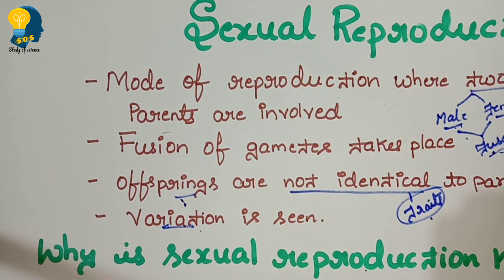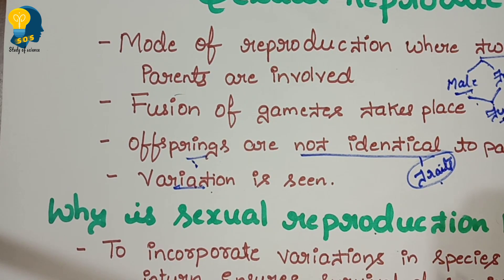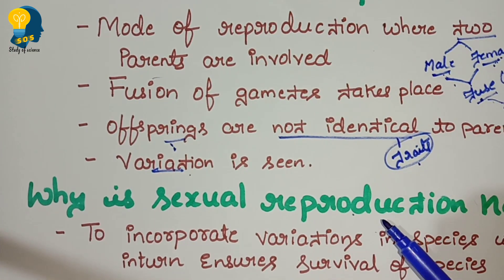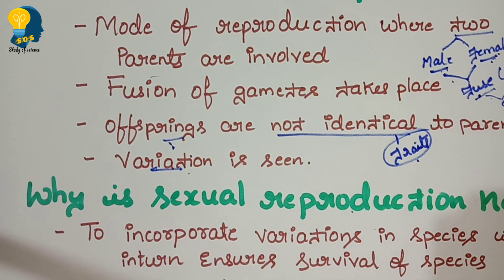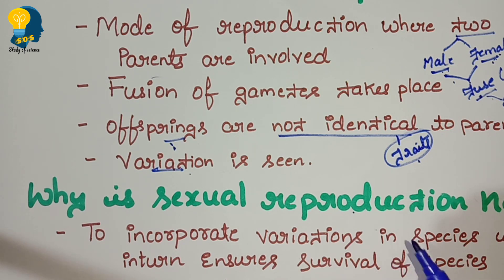Now let us understand why sexual reproduction is needed. Asexual reproduction is already here and it is a primitive mode of reproduction. So already we have asexual reproduction. Then why do we need sexual reproduction? Why can't all living organisms on the earth reproduce asexually?